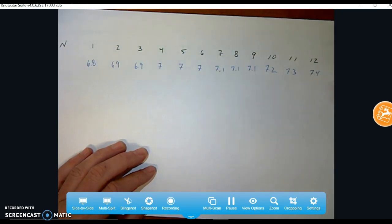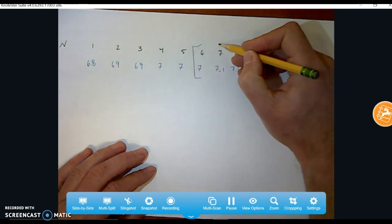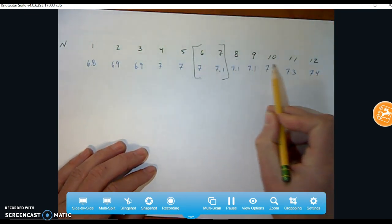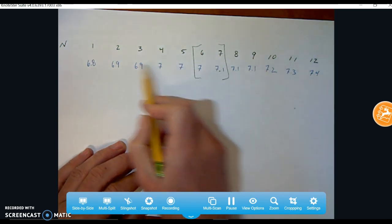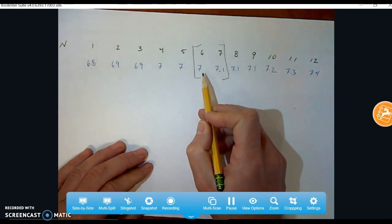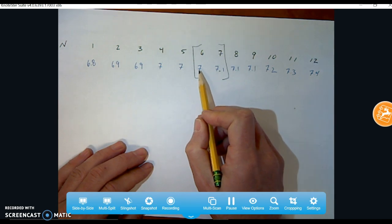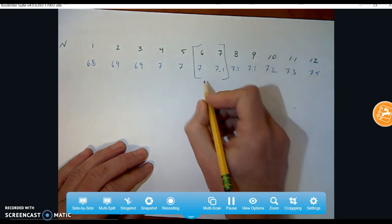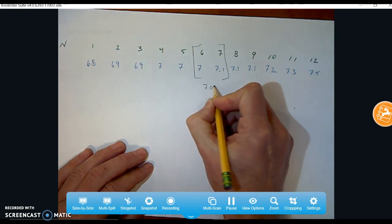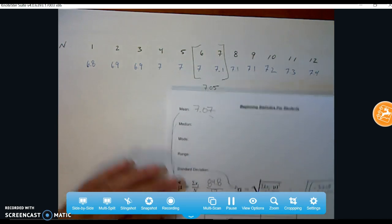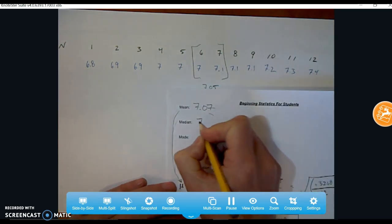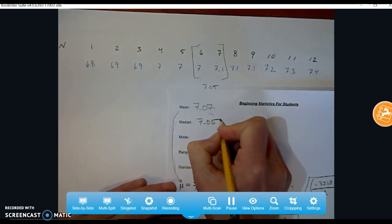So if I look, what are the two middle ones here? Six and seven, right? There's five data sets higher or five measurements and there's five lower. So I want to know what the median is here. I'm just going to average these two. Halfway between seven and 7.1 is 7.05. So that's my median. For this data set then, my median is 7.05.